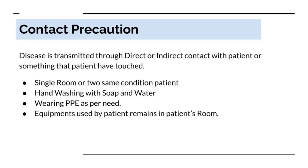Next is contact precaution. Contact diseases are transmitted through direct or indirect contact with a person or something that a person has touched. Contact precautions require hand washing with soap and water and wearing PPE as per the need — gloves when coming in direct contact with the patient, and mask, goggles, and gown if there are chances of splashing of body fluids.